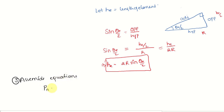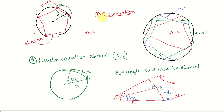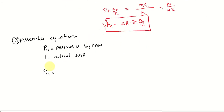Let P_N be the approximate perimeter found by FEM — not the exact value. The exact perimeter is P = 2πR. P_N is found by summing all element lengths: P_N = Σ (E=1 to N) H_E. If you add the lengths of all elements, you get the total perimeter.